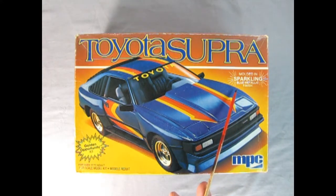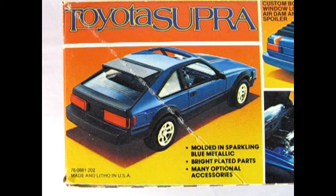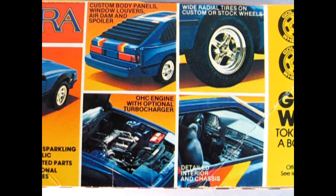This one was molded in sparkling blue metallic finish and was a golden opportunity kit in 1/25th scale for ages 10 to adult. On this side of the box we can see the amazing features. This model is molded in sparkling blue metallic, has bright plated parts and many optional accessories. We get custom body panels, window louvers, air dam and spoiler, overhead cam engine with optional turbocharger, wide radial tires on custom or stock wheels, and a detailed interior and chassis.